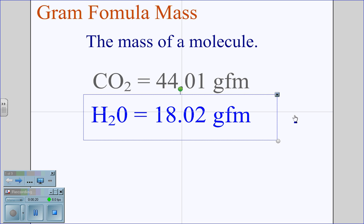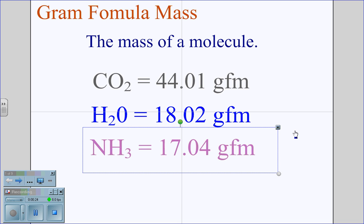Water, H2O, is equal to 18.02 for its gram formula mass. And ammonia, NH3, is 17.04 for its gram formula mass.